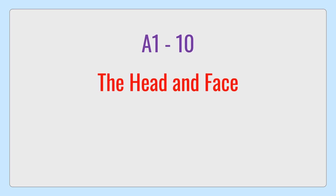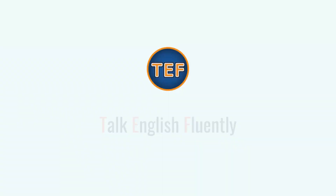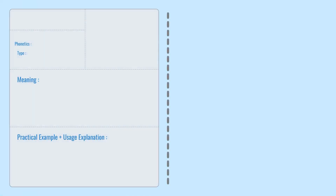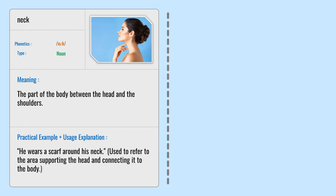The Head and Face. Neck — the part of the body between the head and the shoulders. He wears a scarf around his neck. Used to refer to the area supporting the head and connecting it to the body.